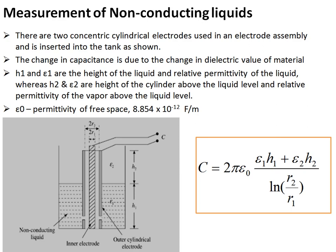The effective capacitance is given by C = (2π·ε₀ / ln(r₂/r₁)) · (ε₁·h₁ + ε₂·h₂). As h₁ rises, the capacitance increases because the dielectric constant of the liquid is much higher than that of air or vapor. This is the operating principle for non-conducting liquids.